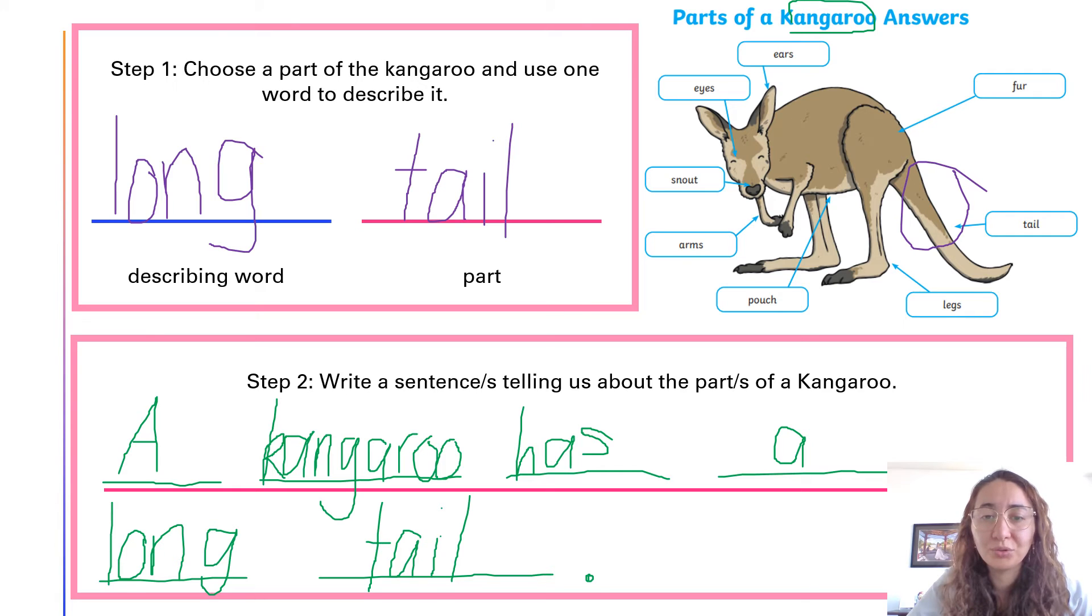So choose a part. Step one. Use one word to describe it. Then step two. Write a sentence about your kangaroo. Have fun. You might even write some more sentences. So pause this video. And then when you're ready, you can come back and listen to the next activity. Have fun guys.